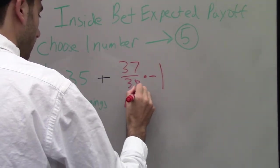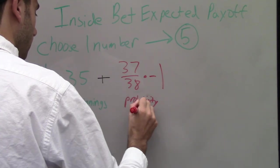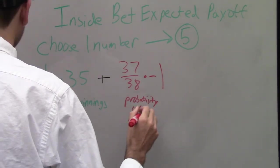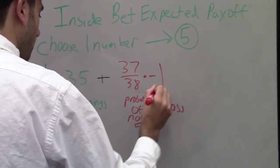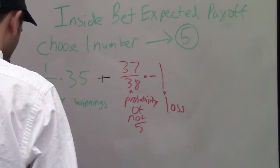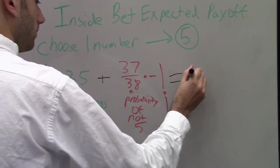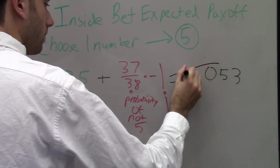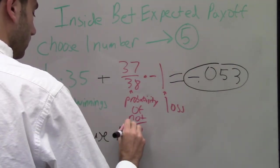And 37 over 38, the probability of not landing on 5, times negative 1, the payoff of losing. And the payoff for this type of bet is negative .053.